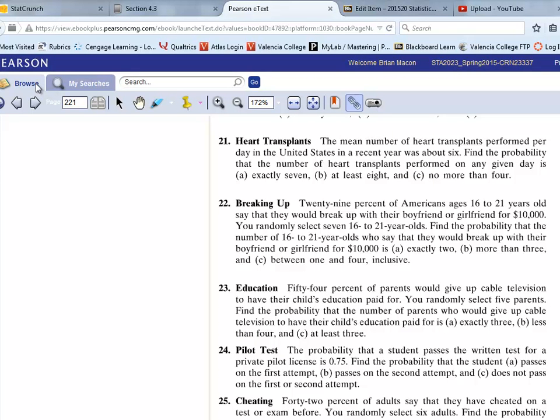So then the last one, letter C, says what's the probability that there's no more than 4? So again, mathematically speaking, this is 4 or less, no more than 4. So we have 4 or less.